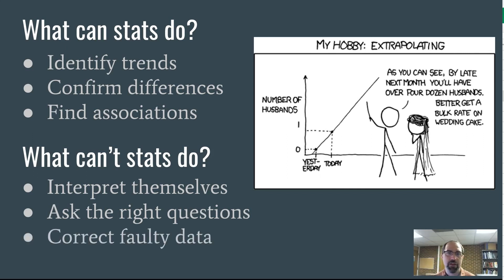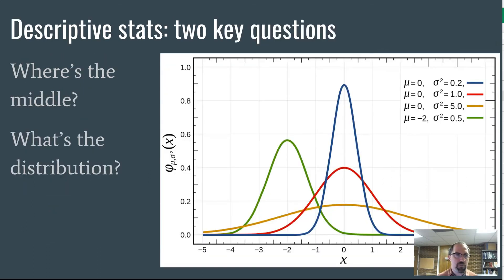And it also can't correct faulty data. Oftentimes we talk about things like big data, that now we have all this information that we didn't used to have before. What stats can't do is tell you here's what's wrong in your data. You can identify outliers, you can do some tweaking with stats, but if the data is bad going in, stats are going to give you bad results coming out. That's something that you as an analyst have to go in and try to understand.